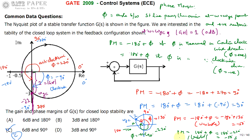Phase margin negative means system is unstable; phase margin positive means system is stable. According to our problem, the right answer is option C.